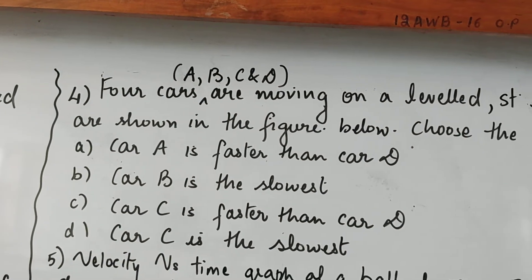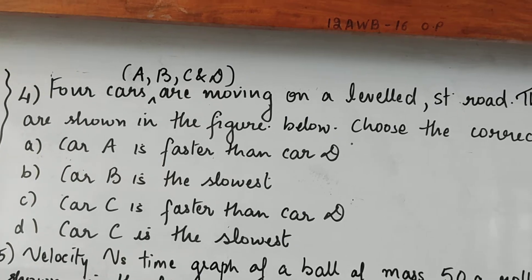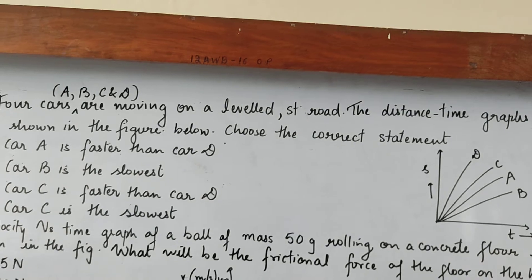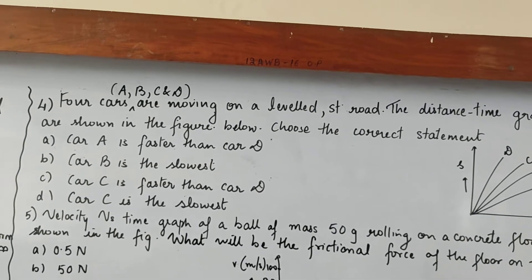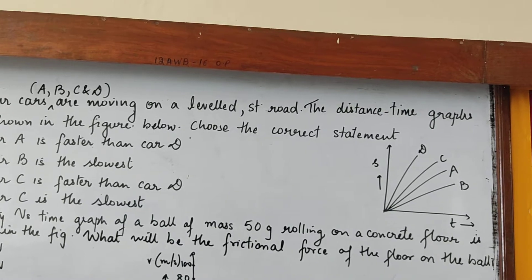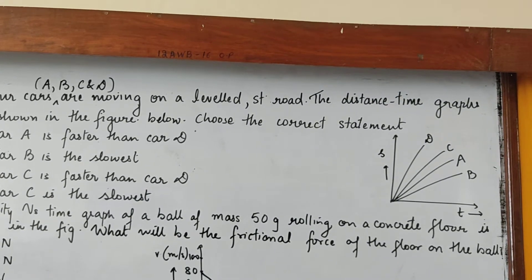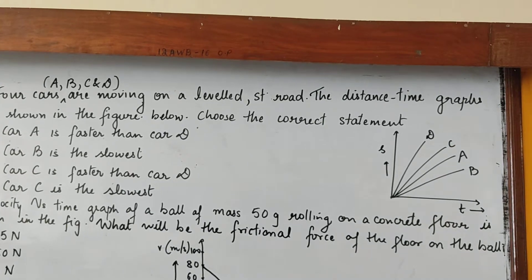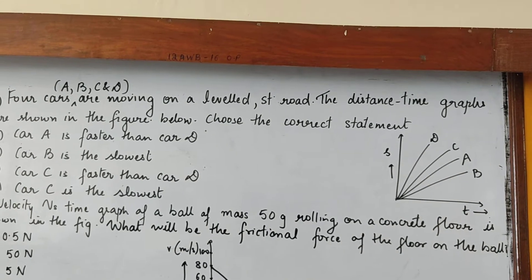Let us read the question now. Four cars A, B, C and D are moving on a leveled straight road. The distance time graphs are shown in the figure below. Now, it means this graph represents, it is actually four curves on one single graph. So it means we can see the graphs of four cars here, right?